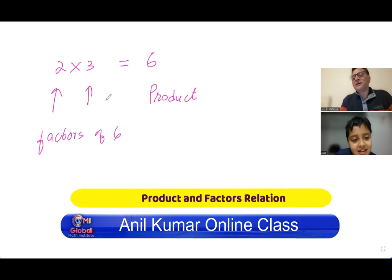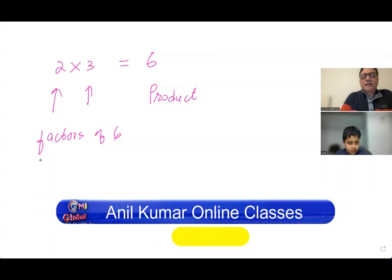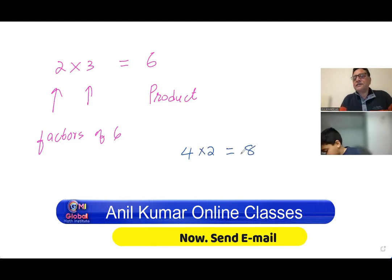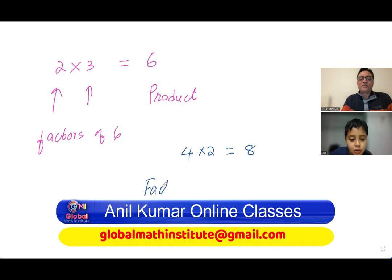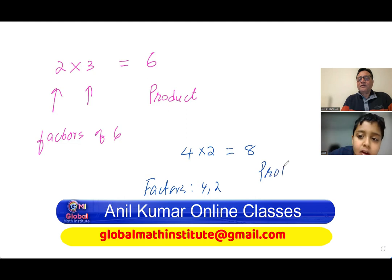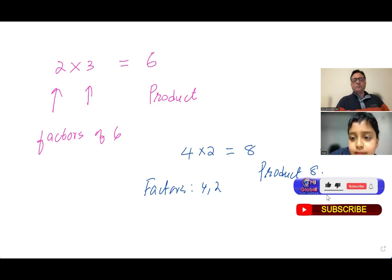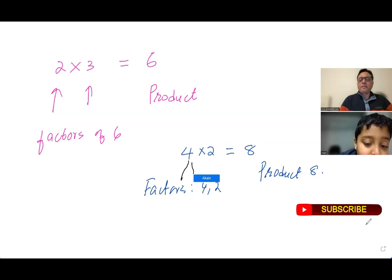So that is how they are related. If four times two equals eight, what are the factors and what is the product? The factors are four and two and the product is eight. So let me just give you some basics. Whatever numbers you multiply together to get the next number, that next number is called the product.